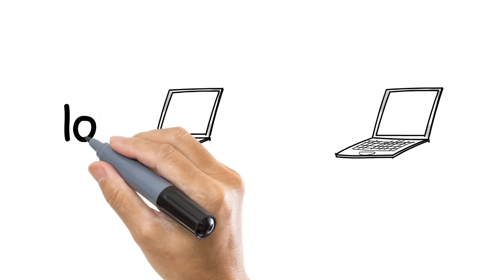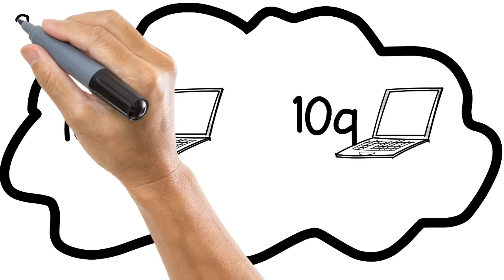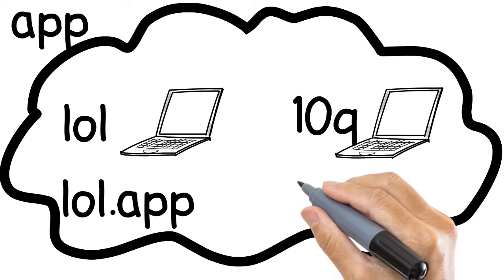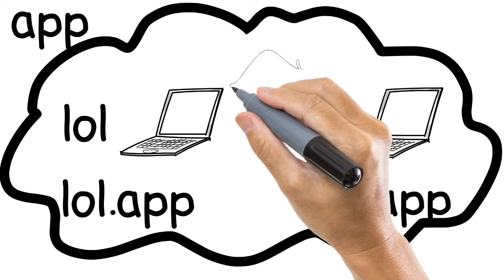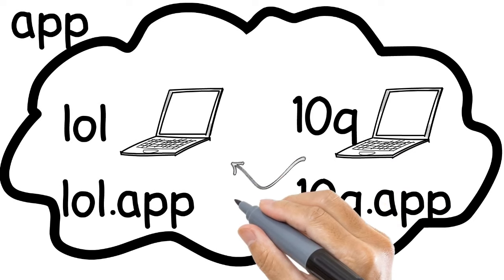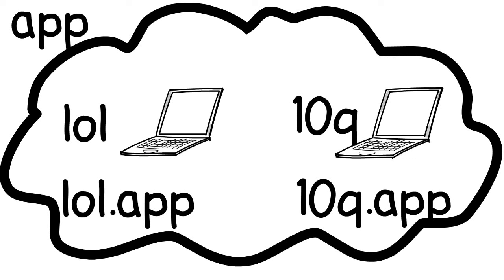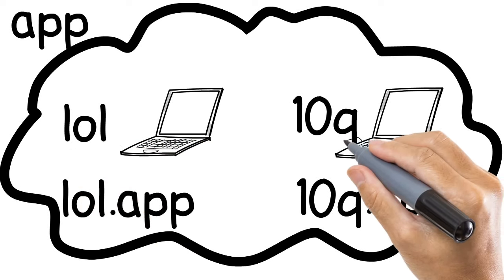Now consider two hosts, lol and 10q. They are connected to a network named app. So their domain names will be lol.app and 10q.app. If lol wants to communicate with 10q, then it will only search for the label 10q. Similarly, if 10q wants to communicate with lol, then it will only search for the label lol. That is, in the presence of a single network, the hosts are identified by their hostnames — lol and 10q.